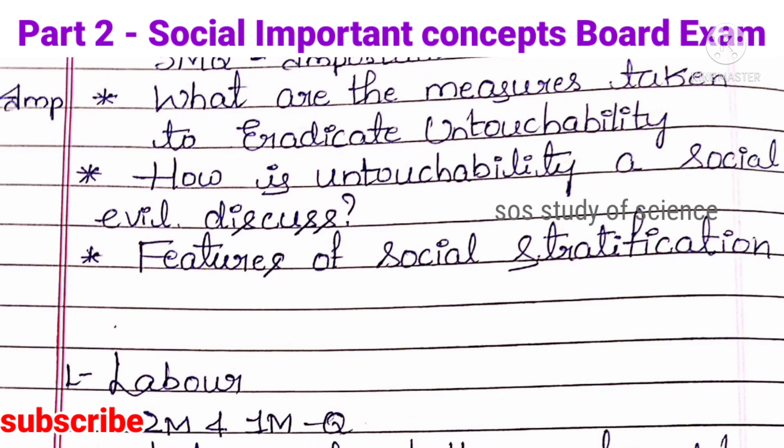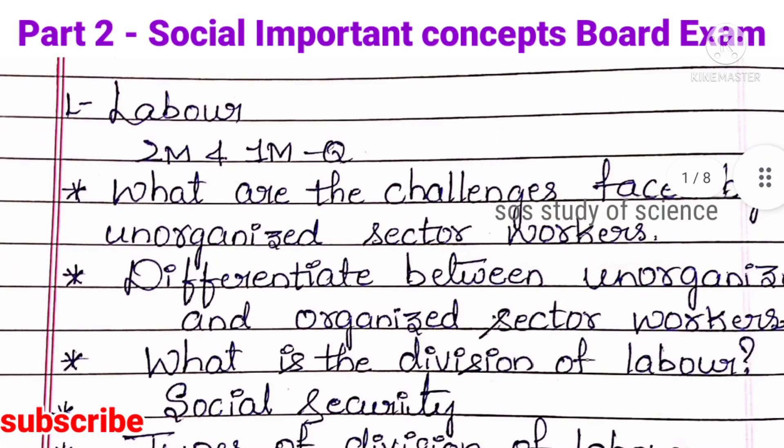Moving to the next lesson — Labor. In this particular lesson, you can expect 2-mark and 1-mark questions. The most important concepts are: What are the challenges faced by unorganized sector workers? Differentiate between unorganized and organized sector workers. What is the division of labor? Social security. Types of division of labor. This lesson is the easiest lesson, dear students, so you have to learn all the concepts I have mentioned.